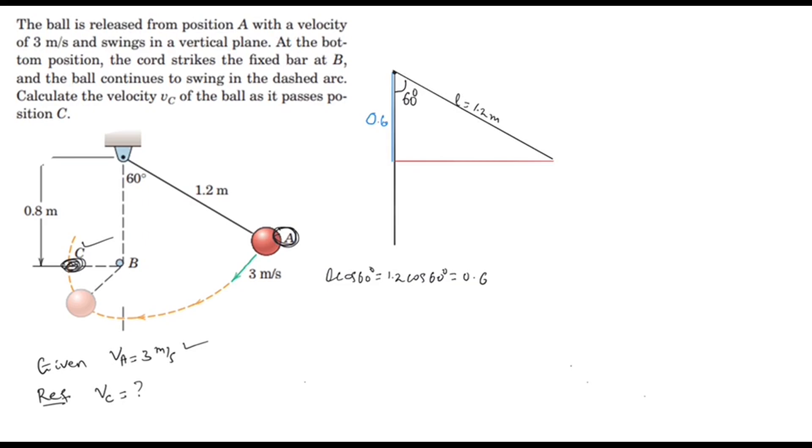Position C is at a distance of 0.8 meters from the bottom. The remaining part will be 0.2 meters - this is the distance, 0.2.